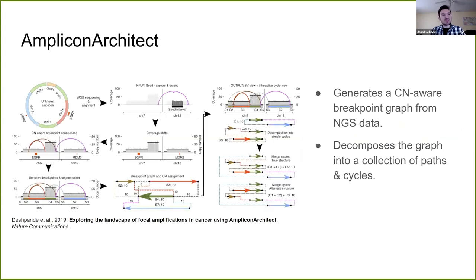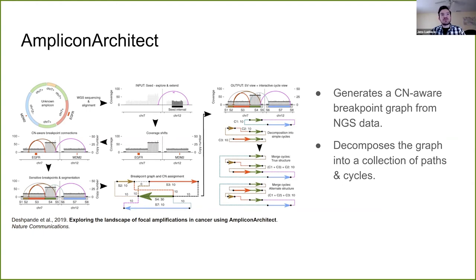AmpliconArchitect constructs a graph from the rearranged genome where ecDNA and other types of focal amplification occur. Given the high copy number intervals, it scans the whole genome sequencing data for rearrangements and measures copy number in those regions. It then constructs a graph, traverses it, and pulls out cycles or paths representing possible structures for ecDNA, trying to maximize how much of the copy number is explained by these decompositions.